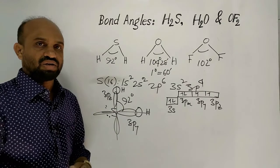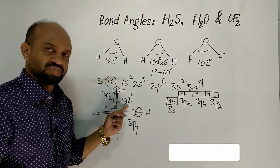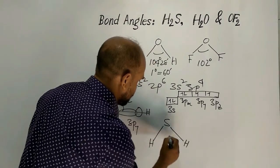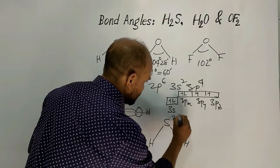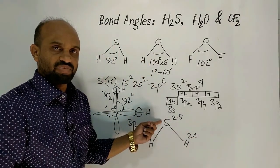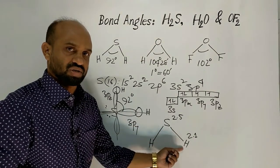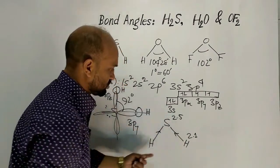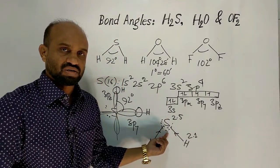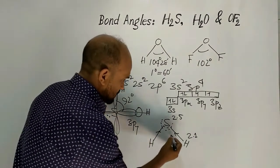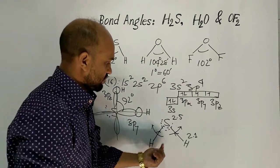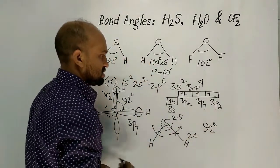It should actually be 90 degrees, but it became 92 degrees. The reason is: the electronegativity of sulfur is 2.5 and hydrogen is 2.1. Sulfur is a bit more electronegative than hydrogen, so the covalently bonded electrons move towards sulfur. As a result, the concentration of electrons around sulfur increases a bit, and this angle is expanded slightly — making the bond angle 92 degrees instead of 90 degrees.